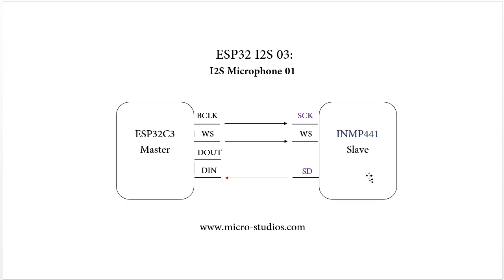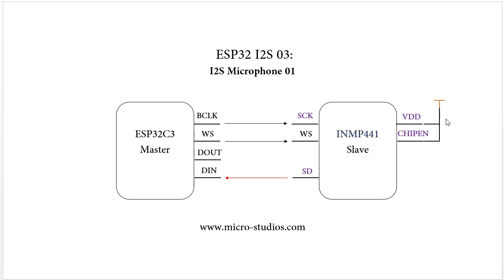Additionally, we have the VDD, which connects to the power supply. The chip enable pin also needs to be connected to the power supply — connect VDD to it to enable the chip.